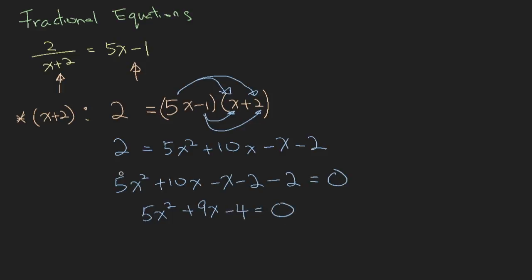So now all you have to do is solve this quadratic equation, which you know how to solve because you have learned that you can make use of the formula. So x is equal to minus b plus or minus square root of b squared minus 4ac over 2a. So 5 is a, 9 is b, and c is minus 4.